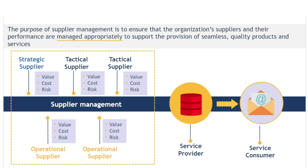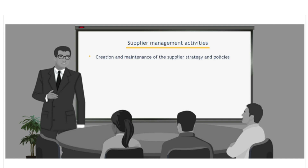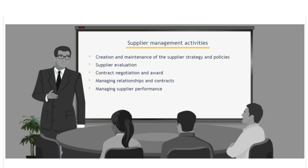The more important the supplier is, the more supplier management will seek to create a closer, more collaborative relationship, working with the supplier to uncover and realise new opportunities to co-create value and reduce the risk of failure. Supplier management activities cover the full supplier relationship lifecycle, including creation and maintenance of the supplier strategy and policies, supplier evaluation, contract negotiation and award, managing relationships and contracts, managing supplier performance, and contract renewal or termination. In many organisations, supplier management will need to work closely with internal legal, procurement and commercial departments.